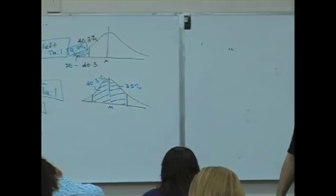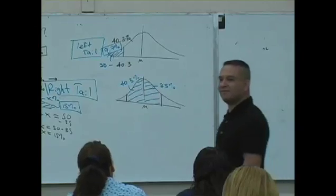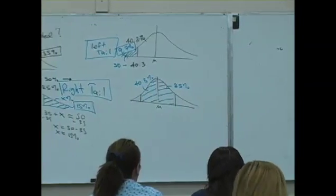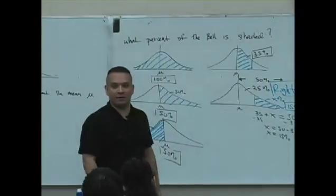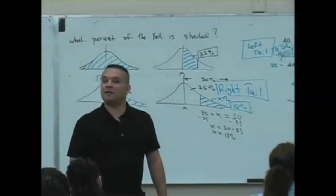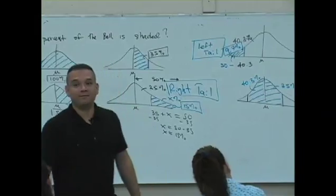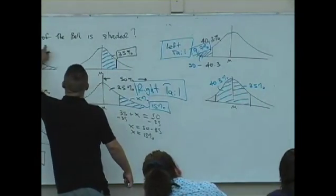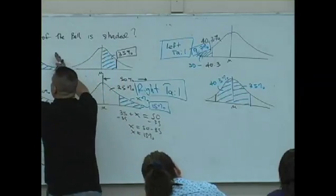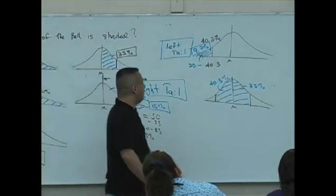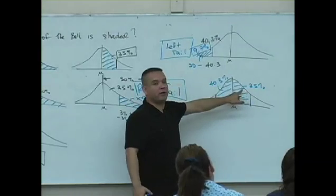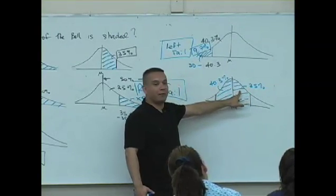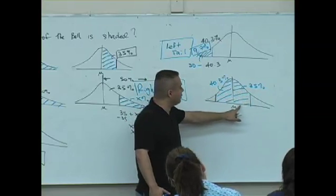What's it going to be, Adriana? Well, what's the question? What percent of the bell is shaded? What is it? What do you think? What would you do? The question is, what percent of the bell is shaded? This is 100 percent. What is this 35 percent referring to? What is it pointing to? The right side of the bell, from mu to some value here. What is the 40.3 referring to? The left side of the bell, mu to some other value here.